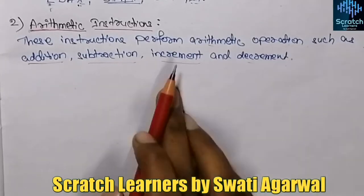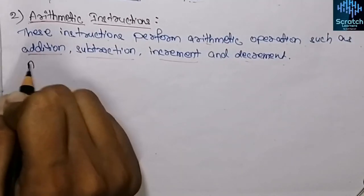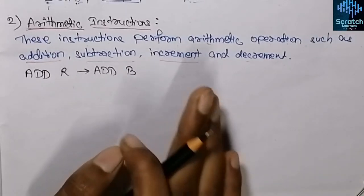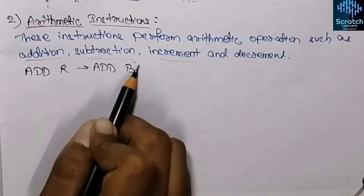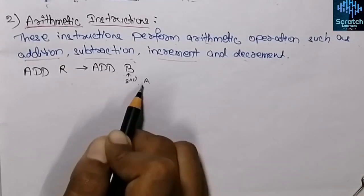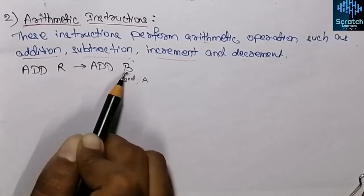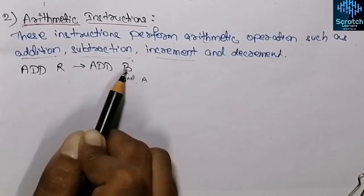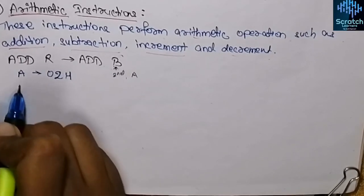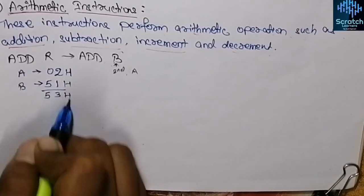The second category is arithmetic instructions, which perform operations such as addition, subtraction, increment, and decrement. For addition, the instruction ADD r — for example ADD B — adds the content of register A (the accumulator, which is always the implicit first operand) with the content of register B, and stores the result back in the accumulator. For example, if accumulator contains 02H and B contains 51H, the result 53H is stored in the accumulator.